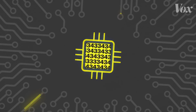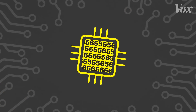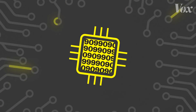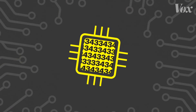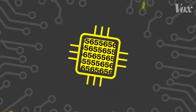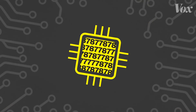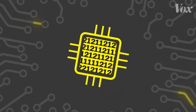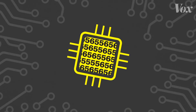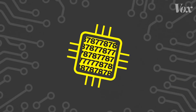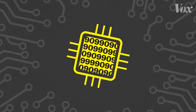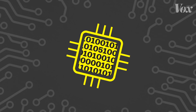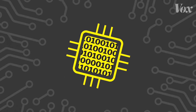Processors are the chips inside a computer that allow it to perform hundreds of billions of calculations per second. Think of it as a computer's brain. Speculative execution allows the computer to guess what you might do next and perform necessary calculations for those possible outcomes, keeping one step ahead of you.